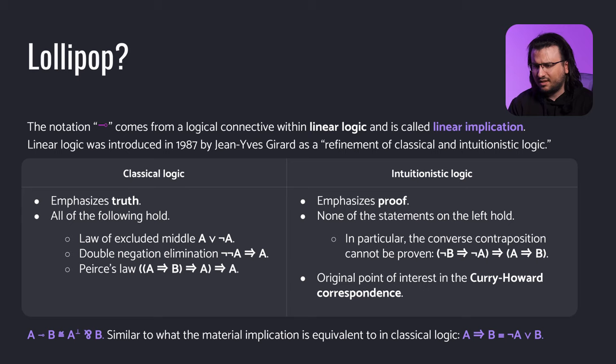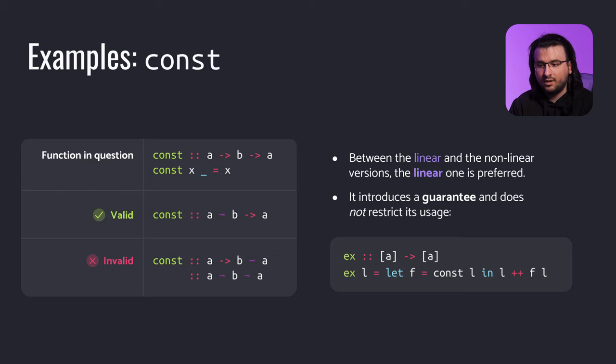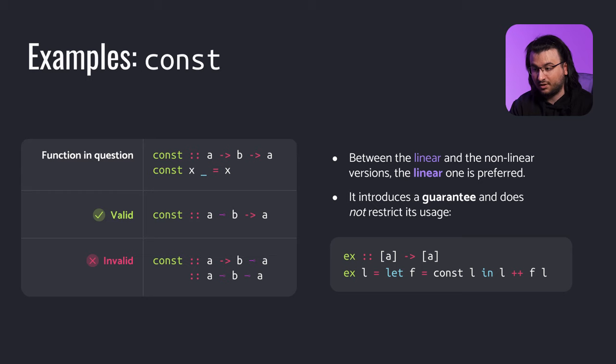Before we continue with the theoretical background, let's analyze a couple of functions and decide which arguments can have multiplicity 1. Const ignores the second argument and returns the first; since the second argument gets discarded, it cannot have multiplicity 1. The first argument, on the contrary, can. We can see that there exist two versions of const — one where both arguments are regular, and another where the first argument has multiplicity 1. The linear one is preferred because it introduces a guarantee that its first argument will be consumed exactly once if the entire function is consumed exactly once.